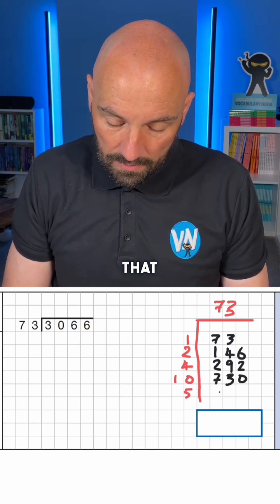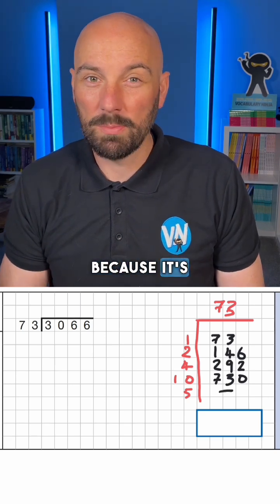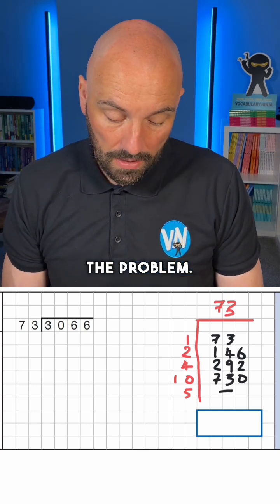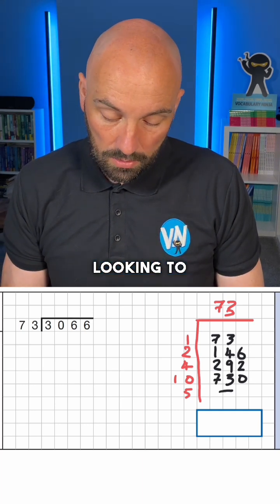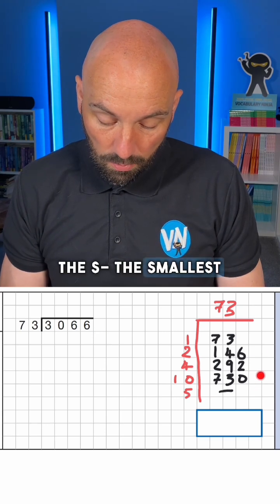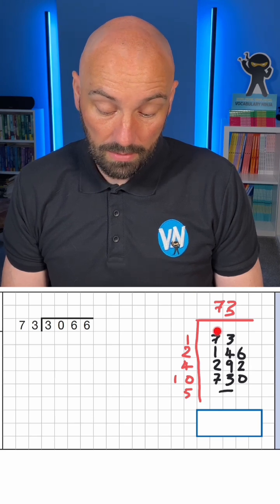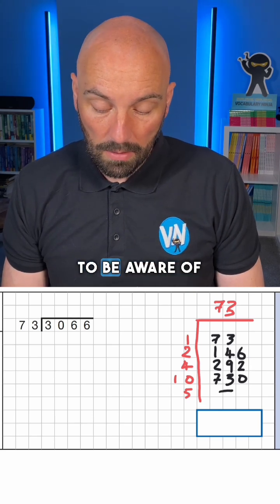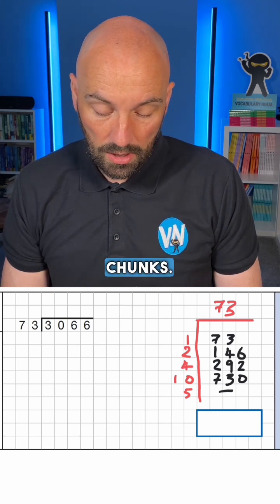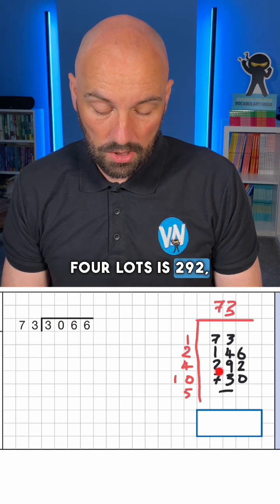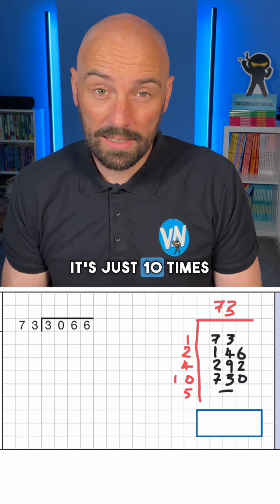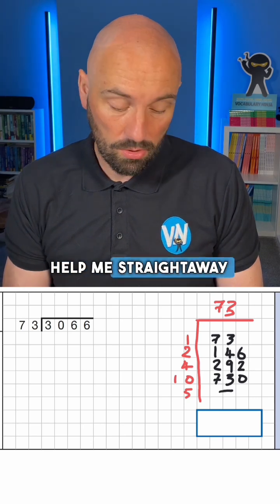Let's say we can't work out five times because it's an odd number — that's fine, we can still solve the problem. What we're looking to do is subtract these big chunks away. We can also multiply these by 10 to take away bigger chunks. So if I know that four lots is 292, I know that 40 lots is 2,920 — it's just 10 times bigger. And that's going to help me solve this problem straight away.